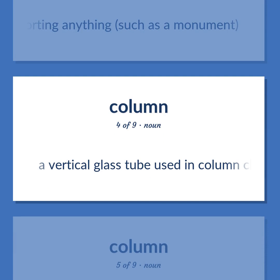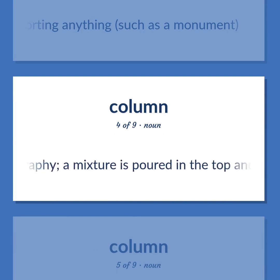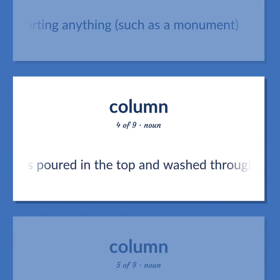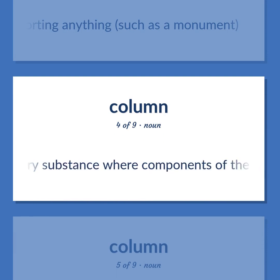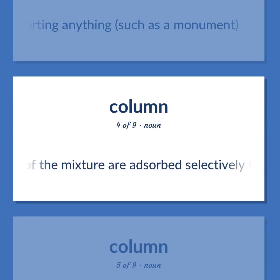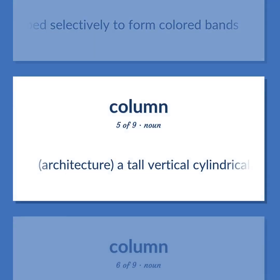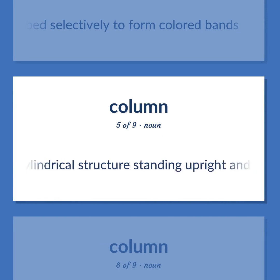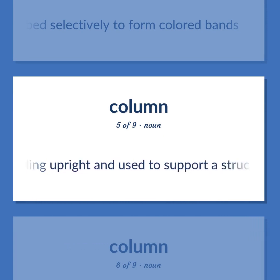A vertical glass tube used in column chromatography — a mixture is poured in the top and washed through a stationary substance where components of the mixture are absorbed selectively to form colored bands. Architecture: a tall vertical cylindrical structure standing upright and used to support a structure.